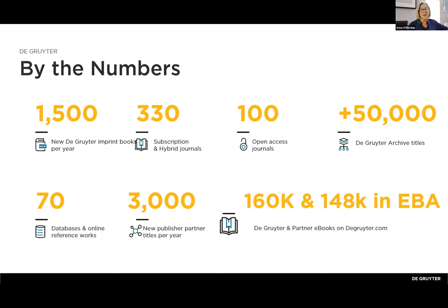We are an independent scholarly publisher, in business since 1749, and we publish books, journals, databases, and other scholarly content. Our head office is in Berlin, and we have offices in Boston and Beijing. In terms of book publishing output, we publish around 1,500 titles a year. We also publish 330 subscription, but primarily hybrid journals, as well as 100 pure open access journals. Our e-book archive includes around 50,000 titles. We also publish a number of databases and reference works, primarily in the humanities.